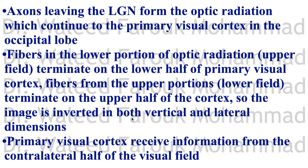The primary visual cortex receives information from the contralateral half of the visual field.